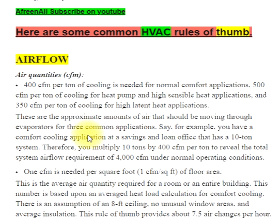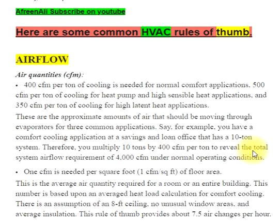For example, you have a comfort cooling application at a savings and loan office that has a 10-ton system. Therefore, you multiply 10 tons by 400 CFM per ton to reveal the total system airflow requirement of 4,000 CFM under normal operating conditions.